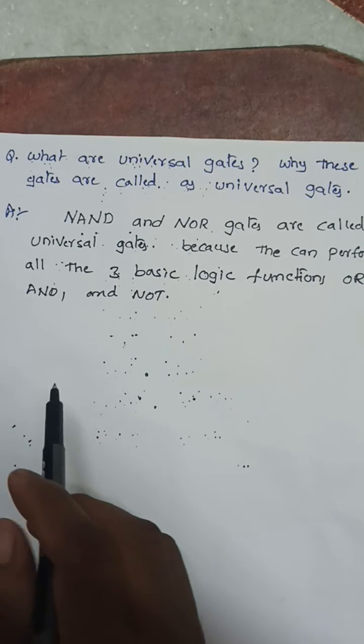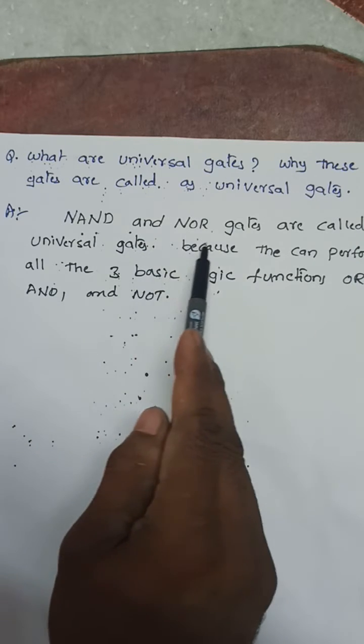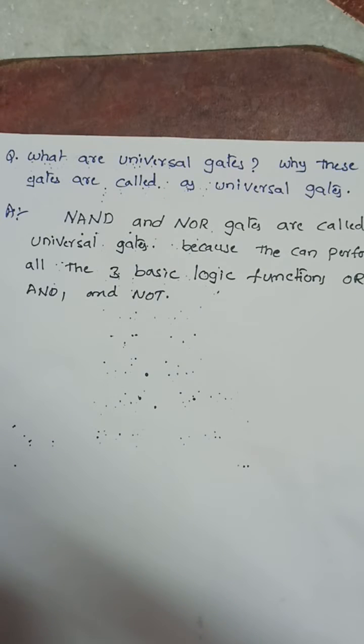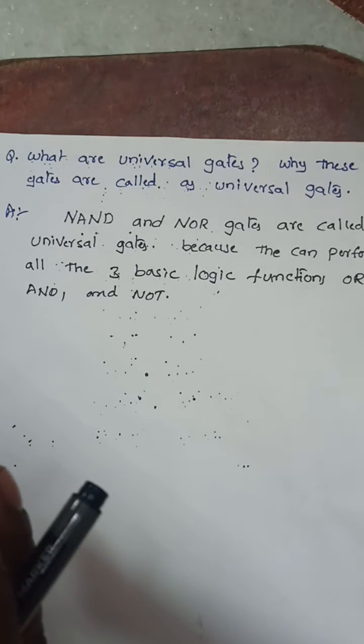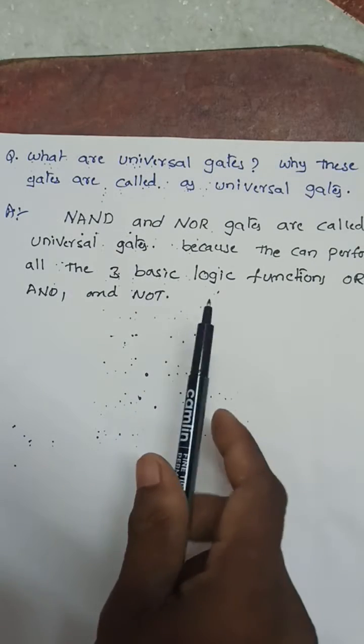So basically, NAND and NOR gates are called universal gates. Universal gates are basically two gates: NAND and NOR gates.